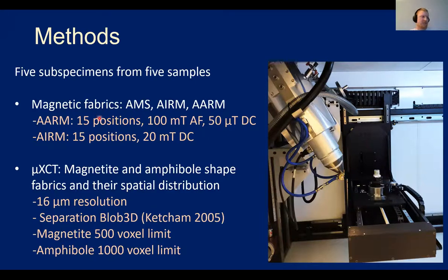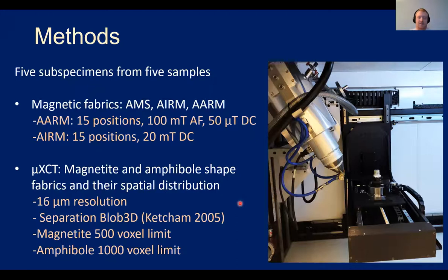For the AARM I used a 15-position orientation scheme with an alternating field of 100 mT and a DC field of 50 µT. For the AIRM I also used a 15-position orientation scheme with a single DC pulse of 20 mT. I also CT-scanned these samples; due to the contrast between phases in the rock I could pick out the magnetite and amphibole shape and distribution fabrics. The scans gave a 16 µm resolution, meaning I can't resolve the smallest magnetite phases.